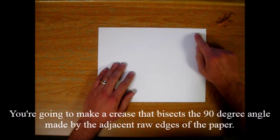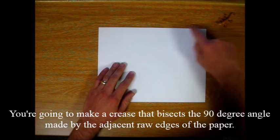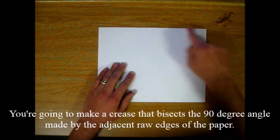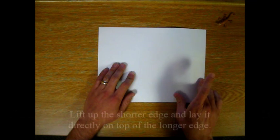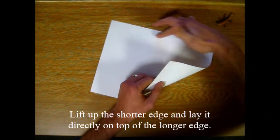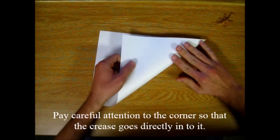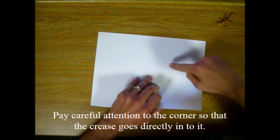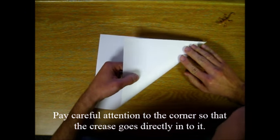We're going to make a crease that bisects the 90 degree angle made by the adjacent raw edges of the paper. Lift up the shorter edge and lay it directly on top of the longer edge. Pay careful attention to the corner so that the crease goes directly into it.